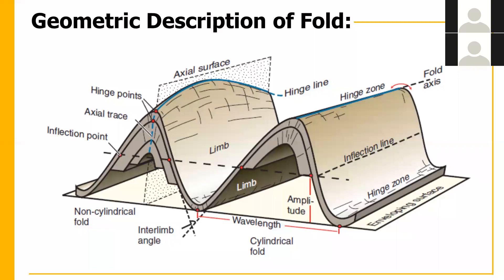Folds occur everywhere — in paper, in cloth, in quilts. Similarly, when folds occur in rocks, we study them in structural geology. On the slide you can see a geometric description of a fold with full labeling: a fold has a limb, a hinge point, an axial trace, and an inflection point.